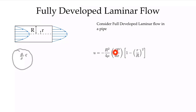dp means p2 minus p1, and of course we need to have a higher pressure at 1 driving the flow in this direction. So this will be a negative quantity, and to get a positive velocity, we see the negative sign appearing here.